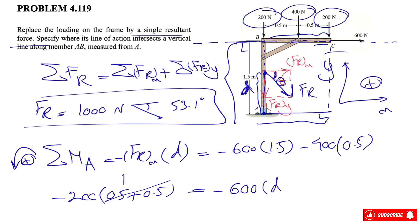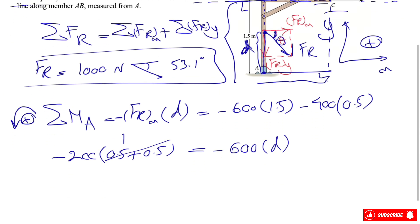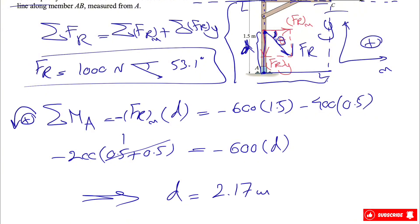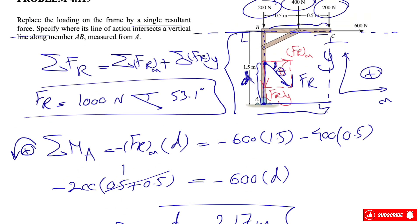Multiplying 600 times d, which is the unknown, and setting the moment equation equal, we solve for d and get d = 2.17 meters. That's the final answer. Please subscribe to the channel and let me know if you have any specific problems from the three textbooks we're covering — I'd be happy to cover them in the next videos. Take care and I'll see you in the next one.